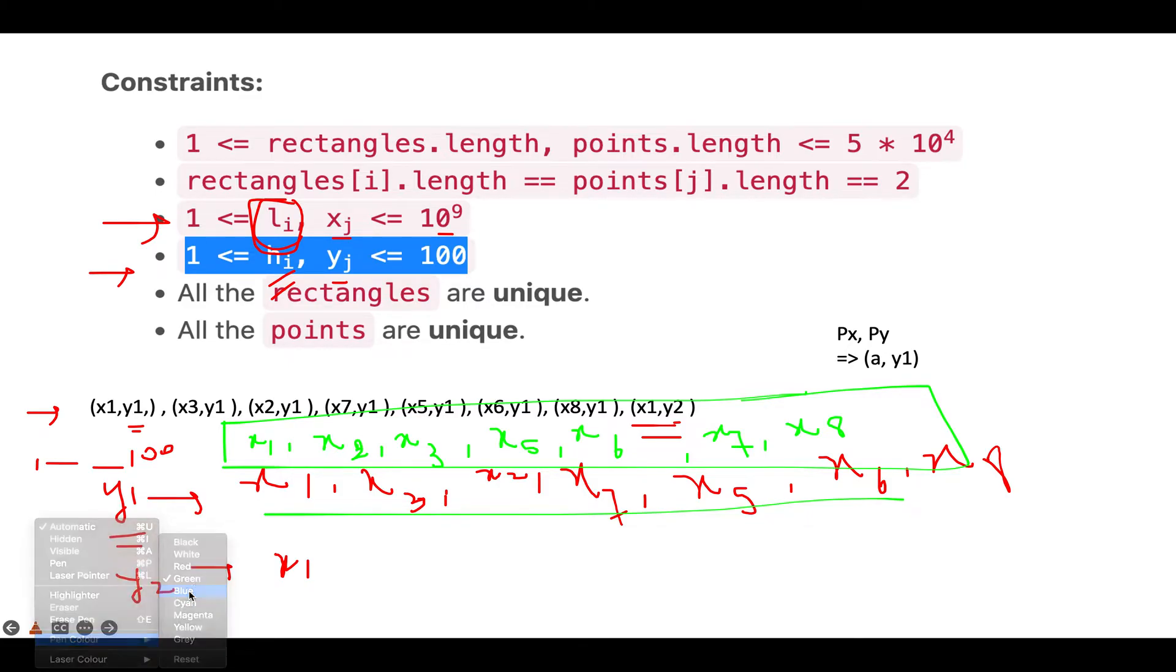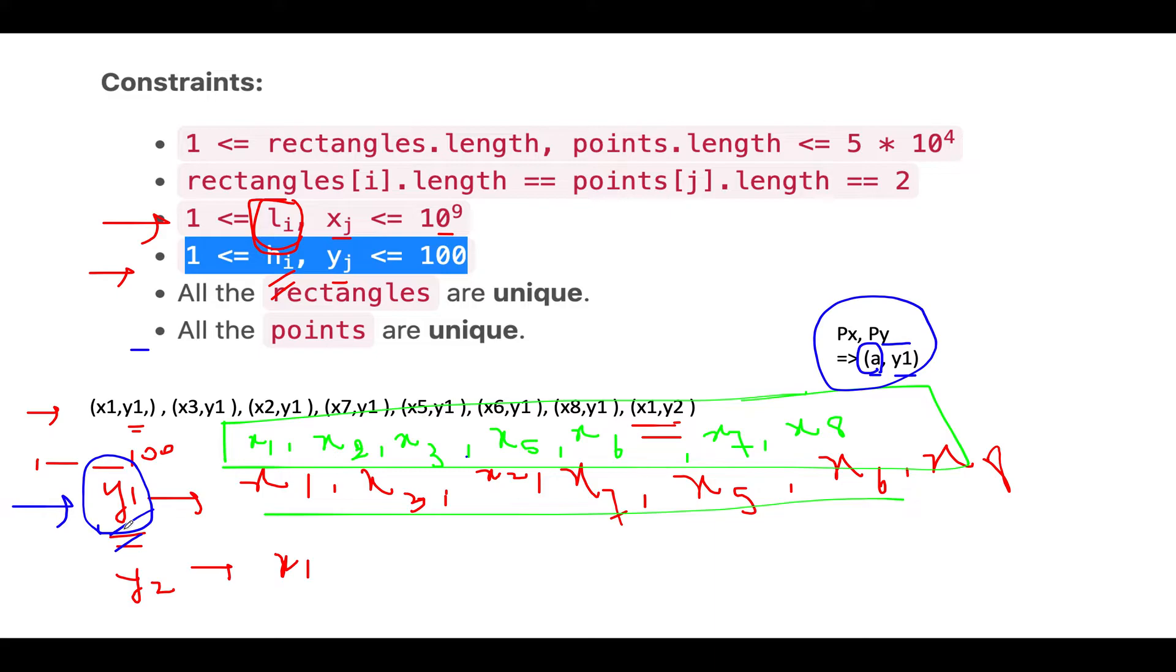Now the next step is really simple. We are going to apply binary search over it. Let's assume there was a point where the x coordinate of the point was a and the y coordinate was y1. Then we will look out for our map that has the same y coordinate as that of our point so that we reduce the set of rectangles over which we have to look.